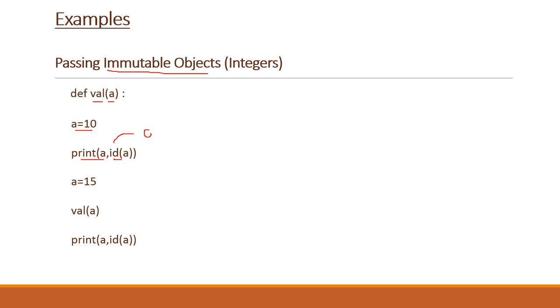Id means identity of an object which refers to the memory location. Now you have changed a's value to 15, and then again we called the function and again we are giving the print command to print a and its identity. Now let us see how it functions.